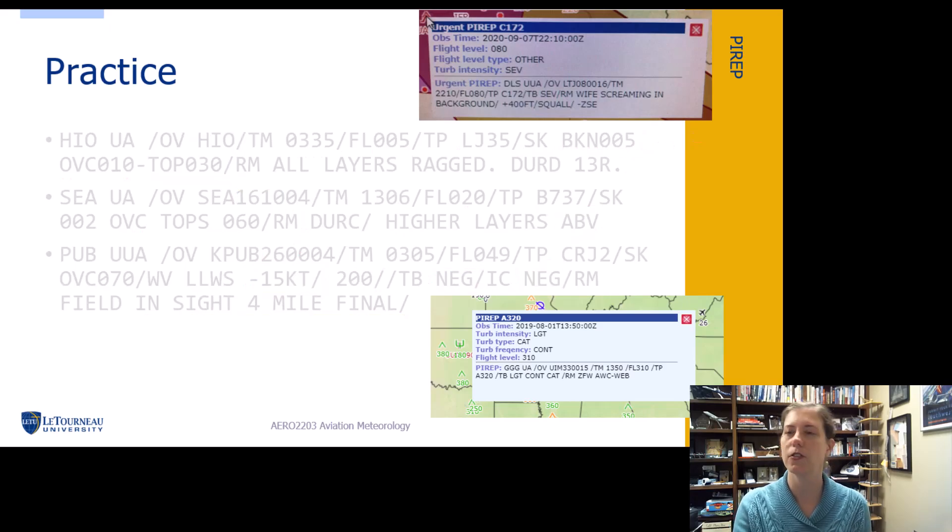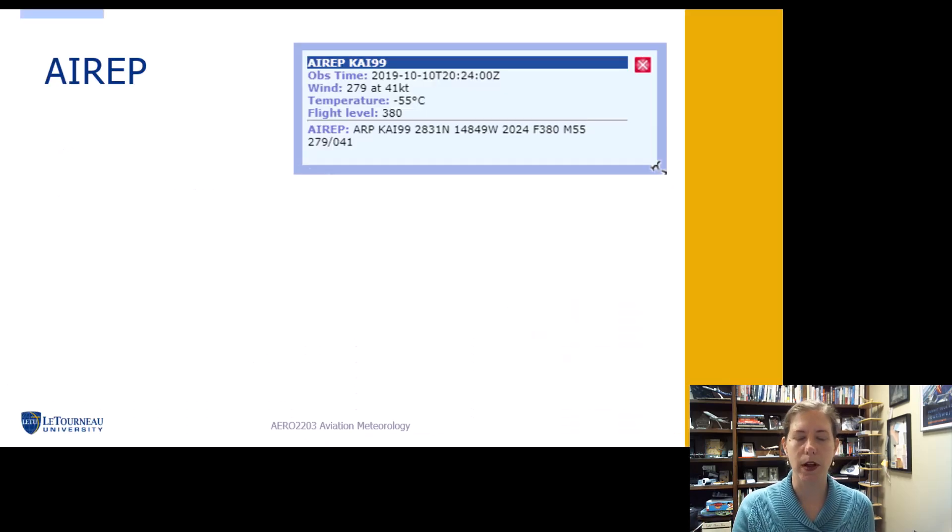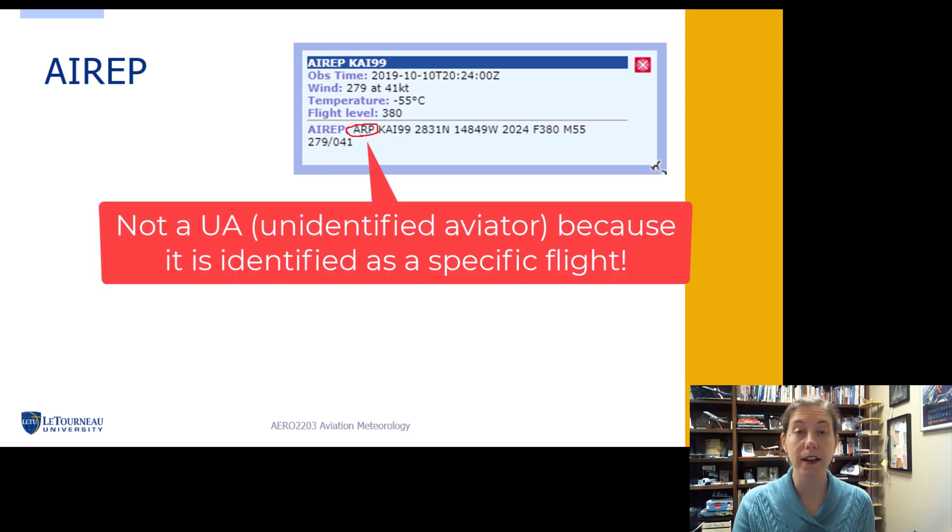So that's some practice. So find some PIREPs, practice on your own, be familiar with how to read these things. Talking briefly about aircraft reports. These can be automated fully or not. They can be augmented by people. Here's an example of one. Here we have an aircraft report. So you notice it doesn't say UA because it's not an unidentified aviator. Nope. We have it identified. It's this flight, which apparently KAI translates to Kaiser Air flight 99.